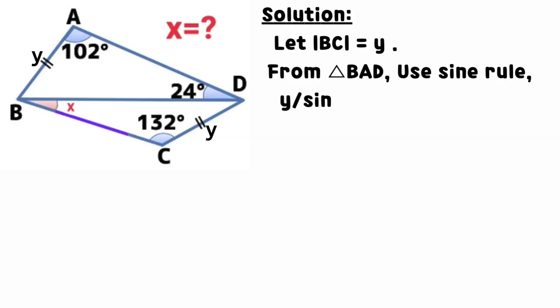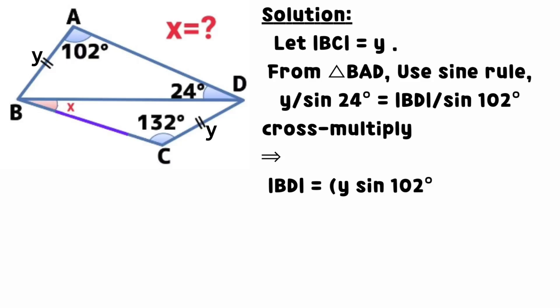Let BC equals y. From triangle BAD, using sine rule we have that y divided by sine 24 degrees equals BD divided by sine 102 degrees.